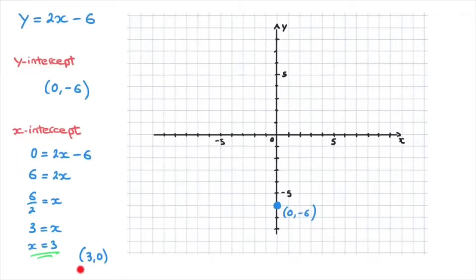Now I plot the x-intercept. That's the point with coordinates (3, 0). And the fact that the y-coordinate is 0 tells me that we're on the x-axis. Starting from 0, we go 3 units across on the x-axis. That's 1, 2, 3. So I add that point as well.